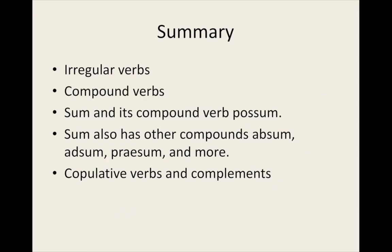To summarise, this lesson has introduced irregular verbs and compound verbs. I have talked about 'sum', which means 'I am' in Latin. 'Sum' is a copular verb which takes a subject and joins it with an adjective or another noun. The word the subject is being joined to is called a subject complement or a predicate. We also discussed the compounds of 'sum', including 'possum'. In subsequent lessons, we will look at 'volo', meaning 'I want', and its compounds 'nolo' and 'malo'. We will also explore other irregular Latin verbs. Thank you for watching.